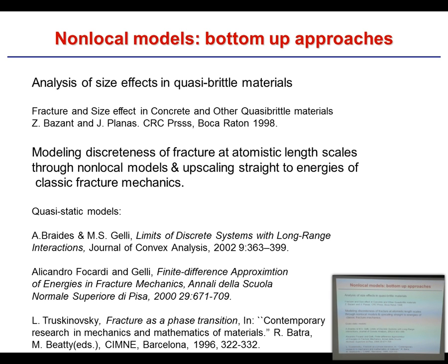There are also bottom-up approaches. An example is the work of Zdeněk Bažant, who showed how non-locality arising from heterogeneity at certain length scales can be used formally. It does one important thing: it gets the sample size effect right for quasi-brittle concrete — it captures the size effect of sample size on strength.